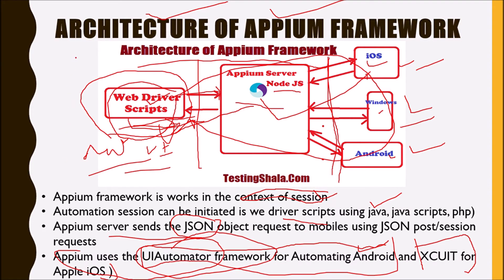I hope with this you are able to understand the architecture of the APM framework, and also what APM is in general — its advantages and the value it provides when automating mobile applications. I hope you enjoyed watching this video. If you like this video, please click on the like button. If you would like to share this video with your friends, click on the share button. And if you are visiting the Testing Shala YouTube channel for the first time, click on subscribe and bell notification so that all our future videos related to software testing will be in your inbox. Thanks for watching. Bye for now, take care.